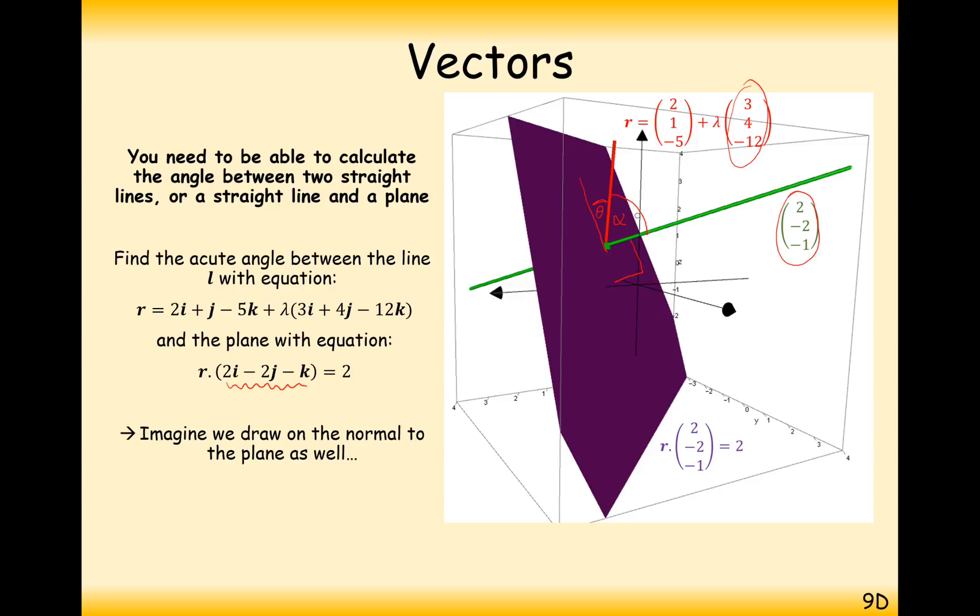It's going to be 90 minus this angle here. So, that's how we're going to approach the question. It's going to be 90 minus the angle between the given line and the normal to the plane.